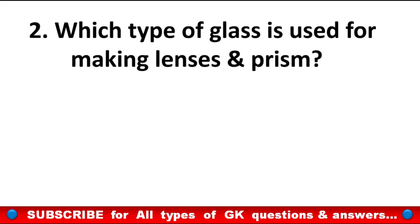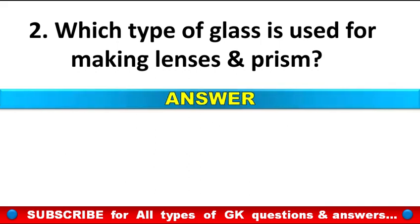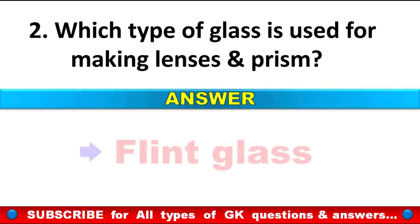Which type of glass is used for making lenses and prisms? Answer: flint glass.